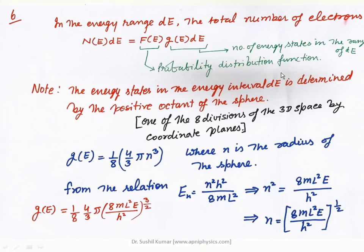The first octant has positive values for all the points. An octant of the sphere is one of the 8th divisions of 3D space by the coordinate planes. Using this concept we define the energy states G(E). G(E) = (1/8) × (4/3)πN³, where N is the radius of the sphere. G(E) defines the quantum states.